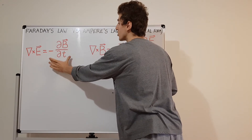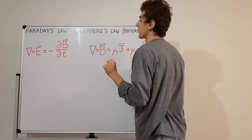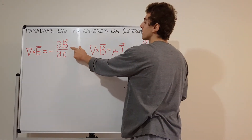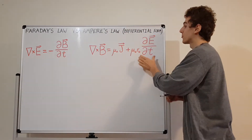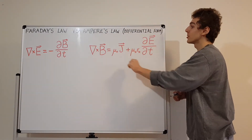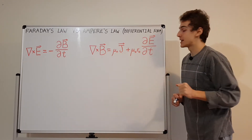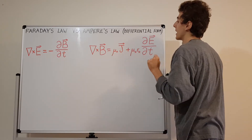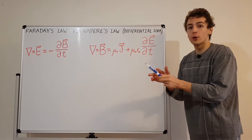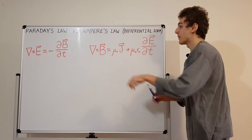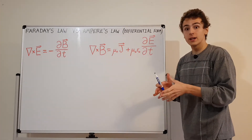On the right-hand side of Faraday's law, we have the time derivative of the magnetic field — changing magnetic fields can cause circulating electric fields. The same is true in reverse: changing electric fields can cause circulating magnetic fields. But Ampere's law also has an additional term, the J term, which is the current density vector. J points in the direction of positive charge movement, and its magnitude is electric current per unit area.